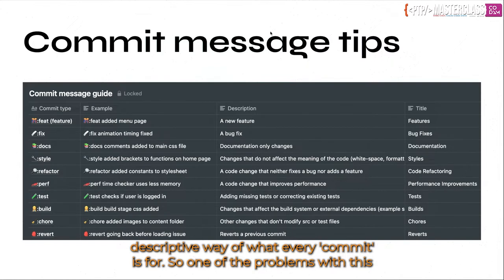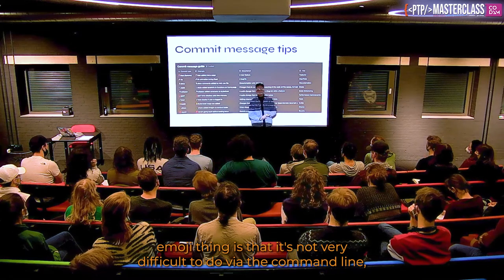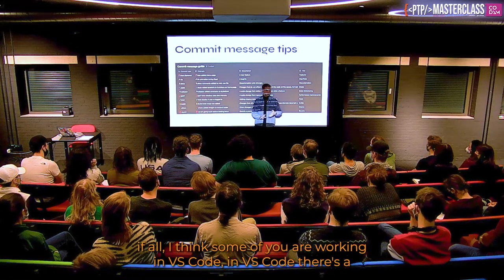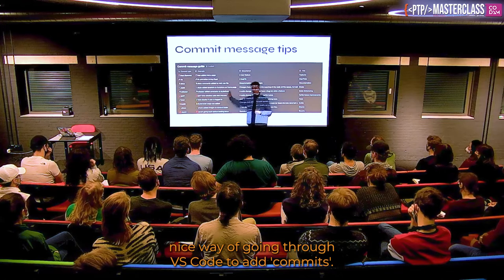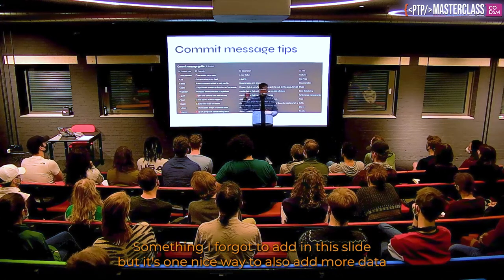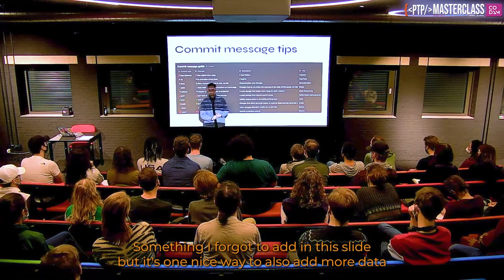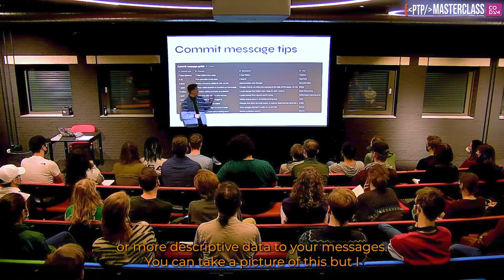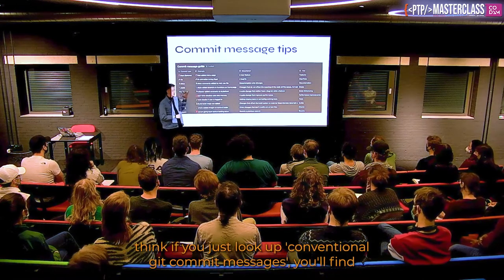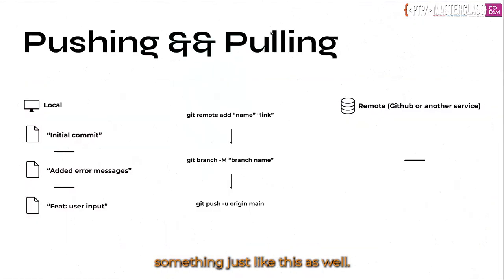One problem with the emoji approach is that it's very difficult to do via the command line. Some of you are working with VS Code — there's a nice way of going through VS Code to add commits. Something I forgot to add in this slide, but it's a nice way to also add more descriptive data to your messages. You can just look up conventional git commit messages and you'll find something just like this.